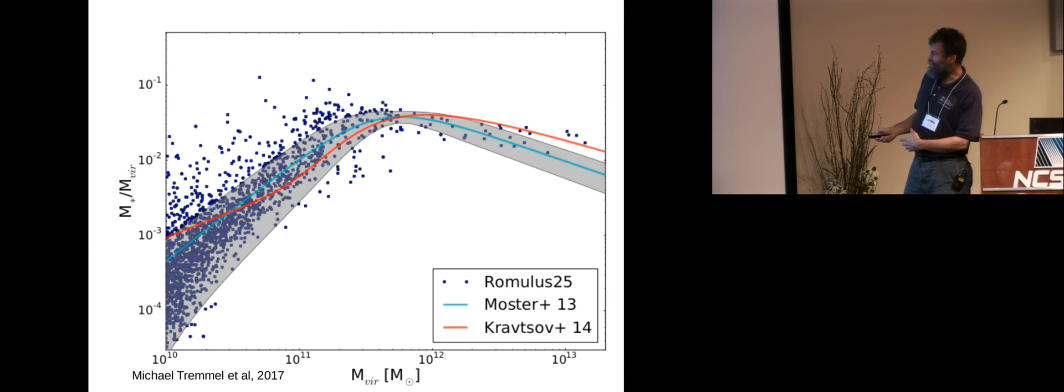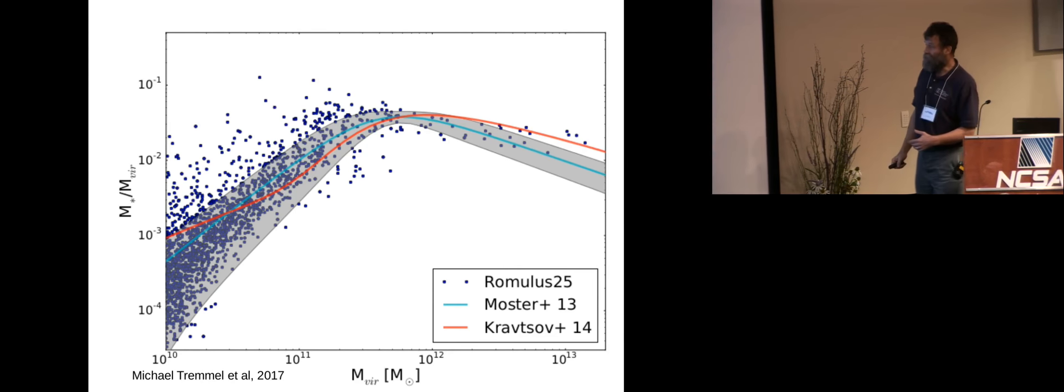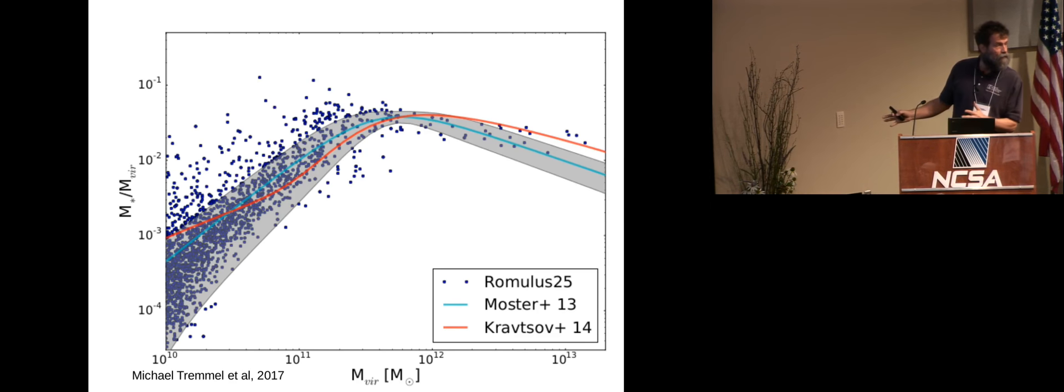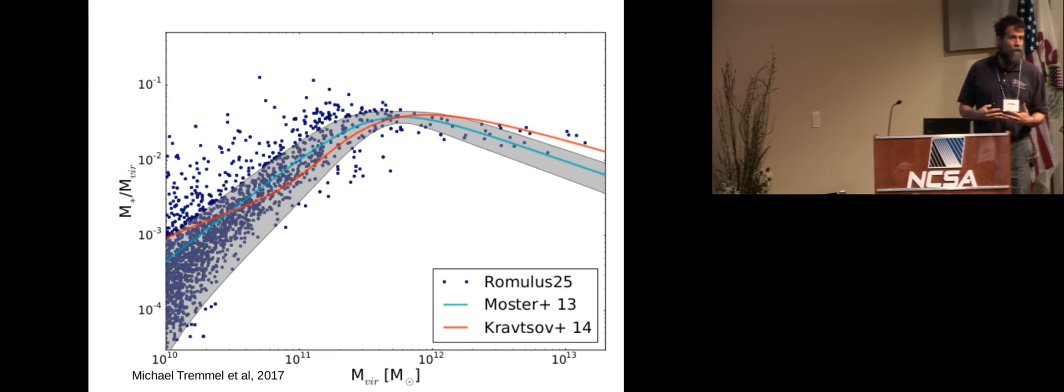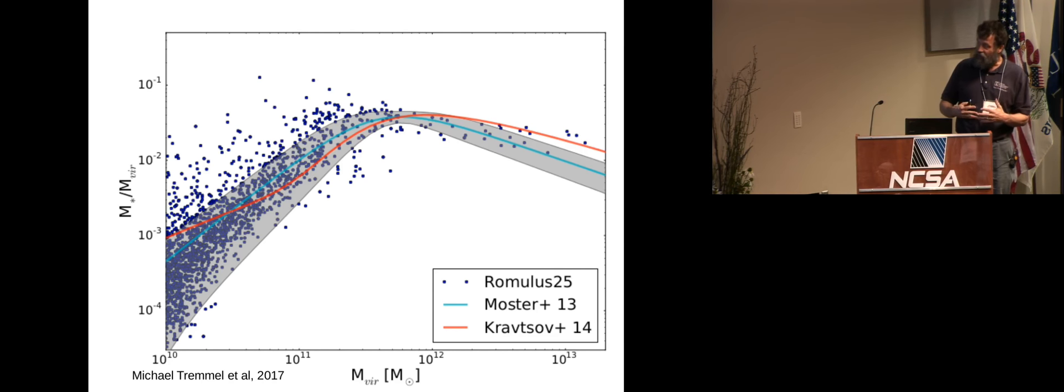And the remarkable result is that a simulation we ran on Blue Waters, 25 megaparsec volume, if we go in and grab a sample of the galaxies, those are the blue points, we actually match up quite well with a couple of the observations. It's actually a little hard to observe what the stellar fraction is here. So that's the difference between the two solid lines, different observers. So we're quite pleased with our results so far. But again, getting these results out is predicated on getting our simulations to scale efficiently in the presence of highly clustered computational load.